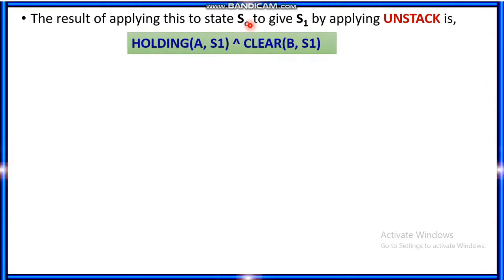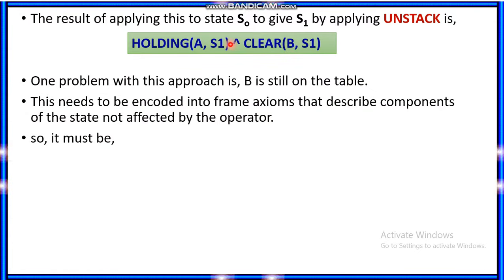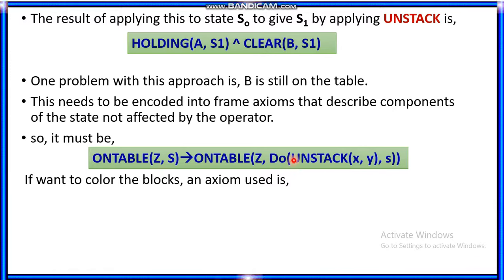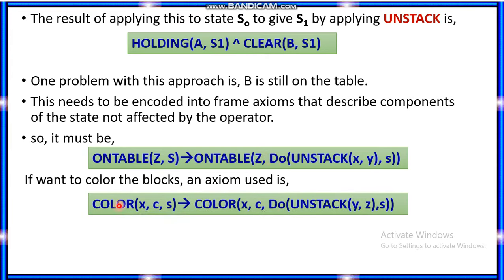Applying that rule from state S1, you go to a state where holding(A) is true and B is clear in the new state. However, there is a problem: B will still be on the table, so you need to encode frame axioms — for example, onTable(x, s) implies onTable(x, do(unstack, ...)) — and you can use a color axiom such as color(x, color) to describe block properties. This leads to the STRIPS approach.